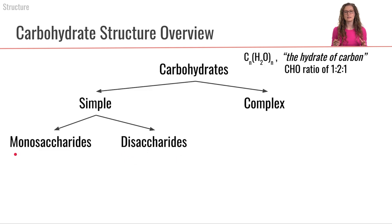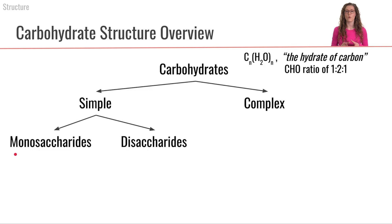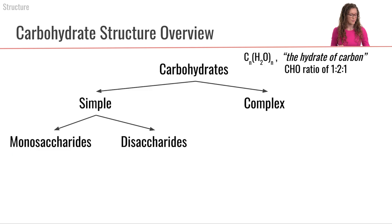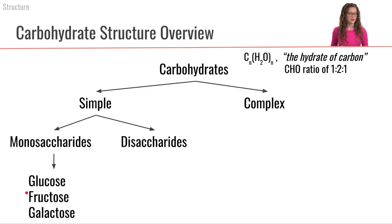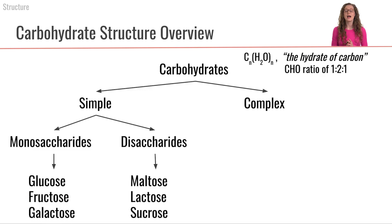Mono meaning one. These monosaccharides are the building blocks that form all of the other carbohydrate compounds. Monosaccharides come in three different flavors: we have glucose, fructose, and galactose. Those are the three kinds of monosaccharides.